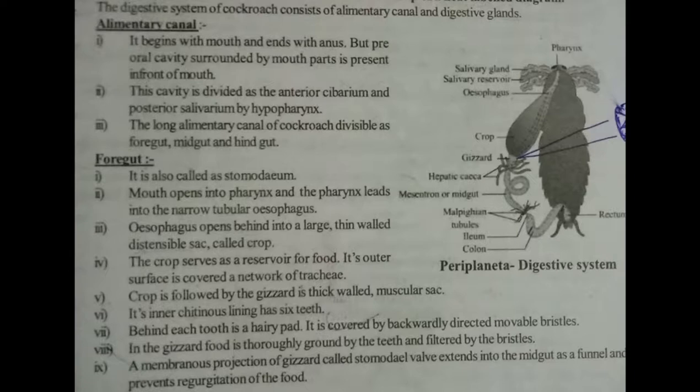The digestive system of the cockroach consists of the alimentary canal and digestive glands. The alimentary canal begins with the mouth and ends with the anus, but a pre-oral cavity surrounded by mouth parts is present in front of the mouth. This cavity is divided into the anterior cibarium and posterior salivarium by the hypopharynx. The long alimentary canal of the cockroach is divisible into foregut, midgut, and hindgut.